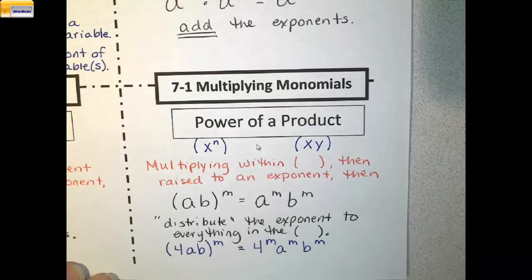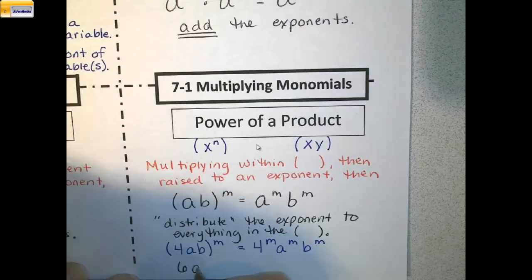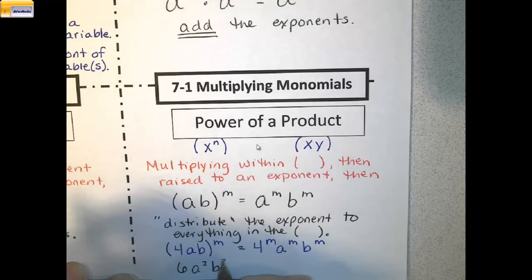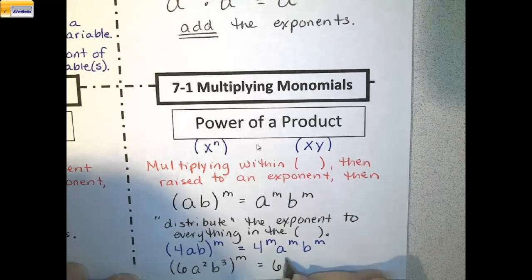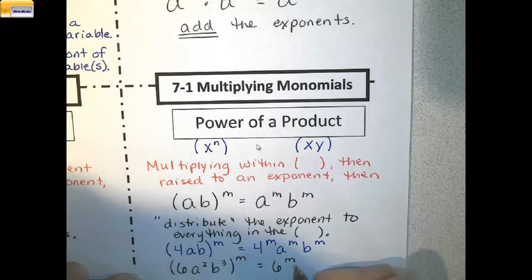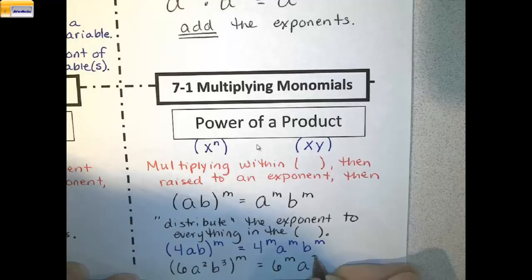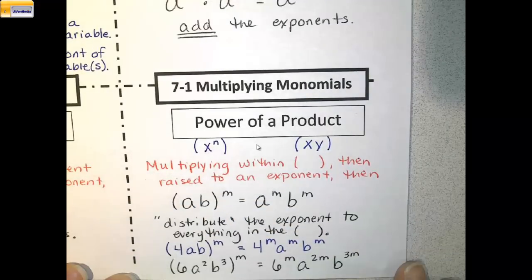Another example would be if I were to start with something like 6a squared times b to the 3rd, all raised to the m. I would first raise 6 to the m. Then I have a squared raised to the m — this is a power of a power — so this becomes a to the 2m, and b to the 3m. You can see that sometimes these rules are used together.